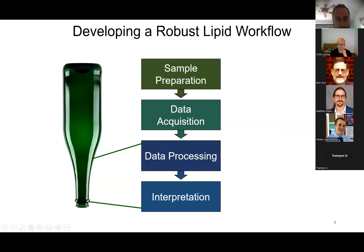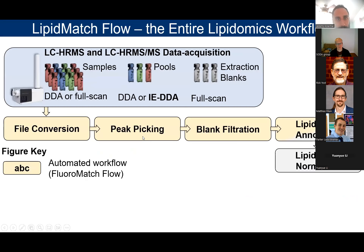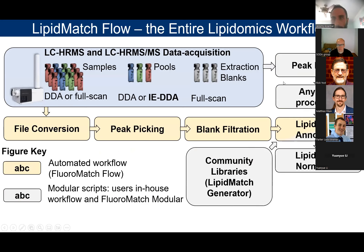Once you get your data acquisition, the real bottleneck for most people is the data processing and interpretation. That's what I found out over a decade ago, and since then I've been working on software to try to ease this process. Just recently — and this is probably the first time I'm presenting this software — we've added a visualization component to validate. The software covers file conversion, peak picking, blank filtering, and annotation. There's a separate one for normalization with lipid standards, and you can also bring your own peak table and use LipidMatch for annotation and visualization off of that table.